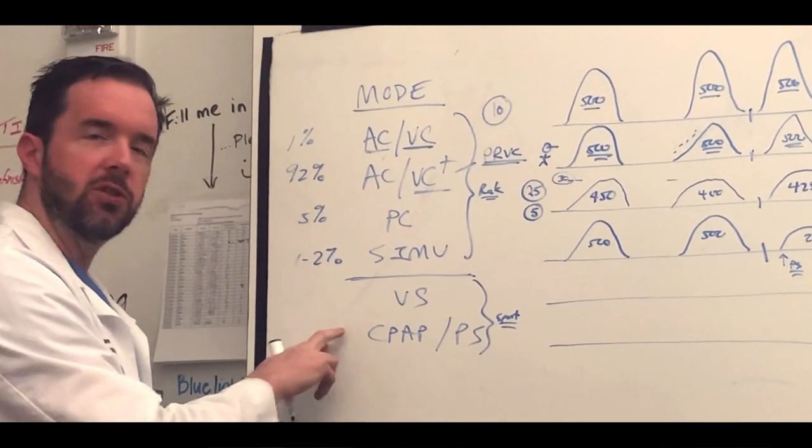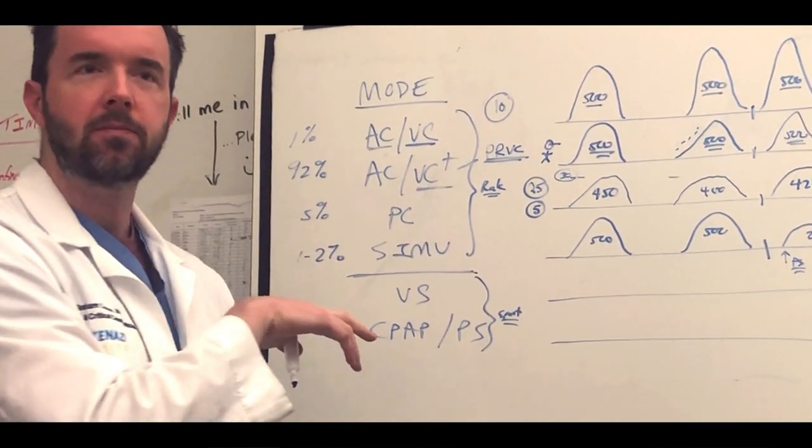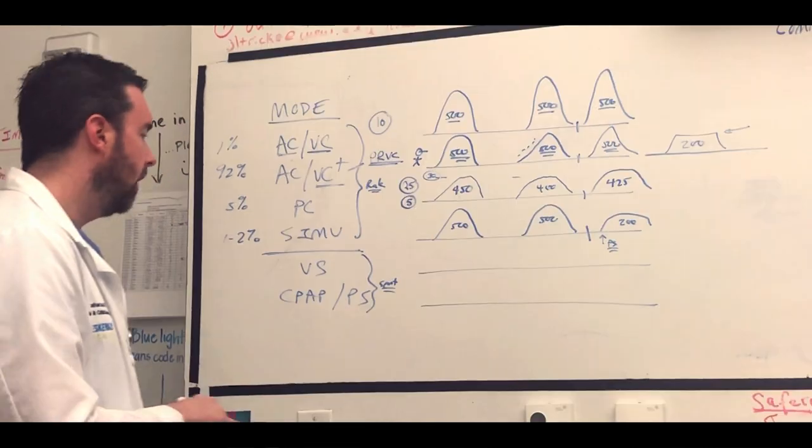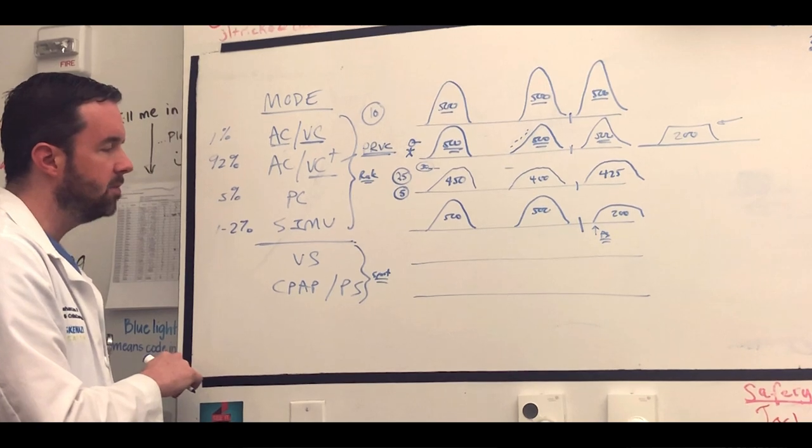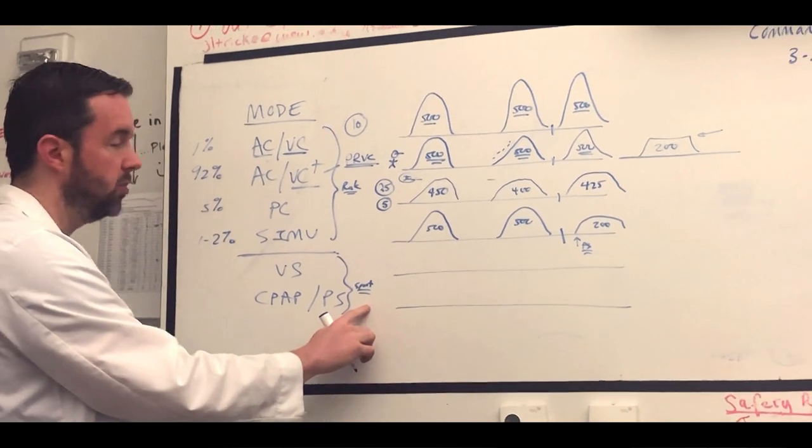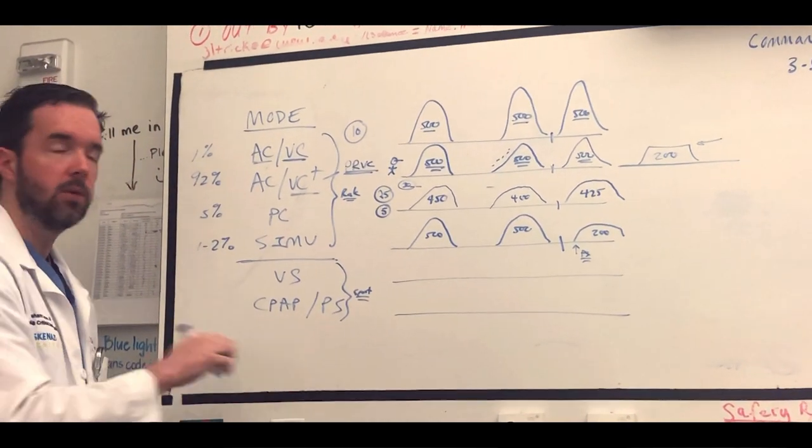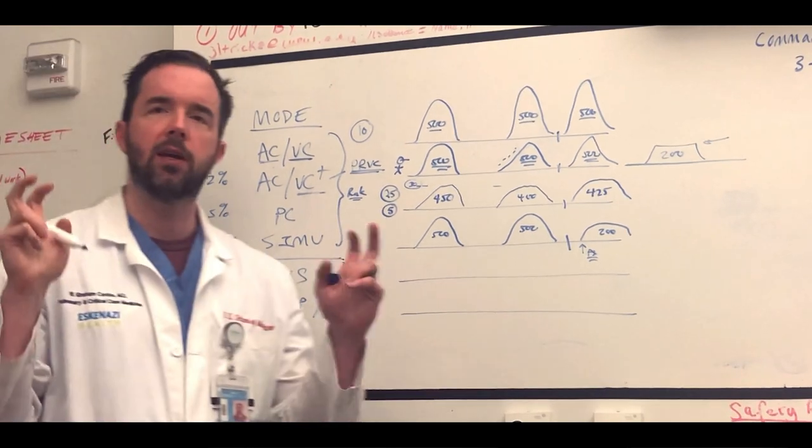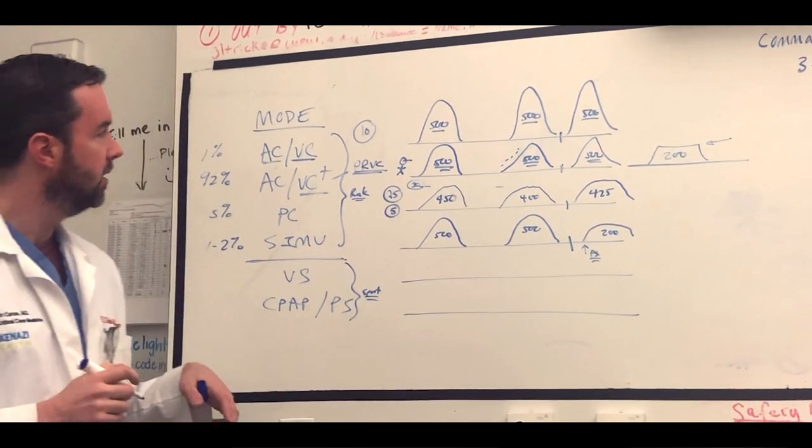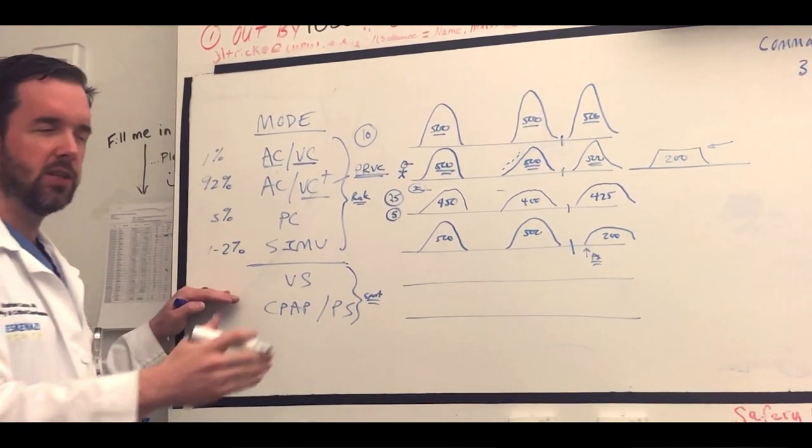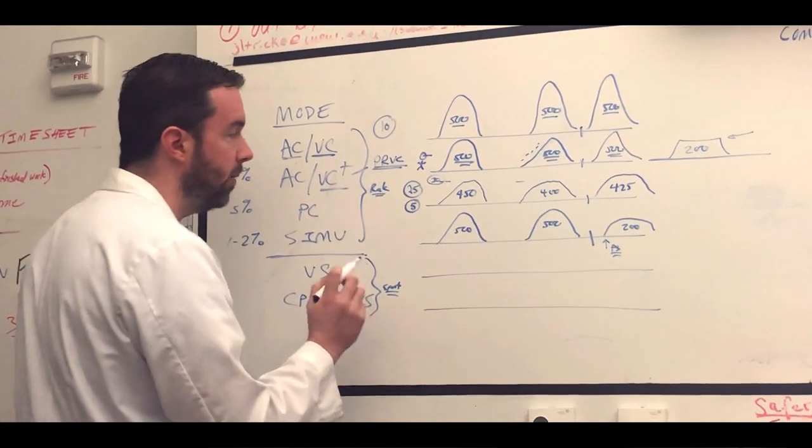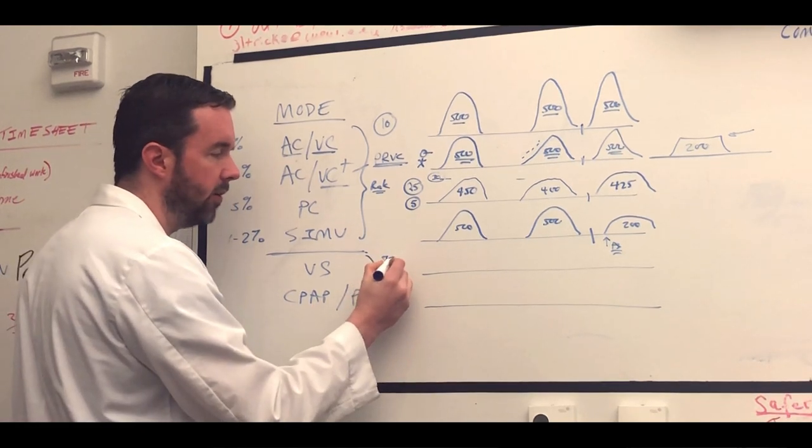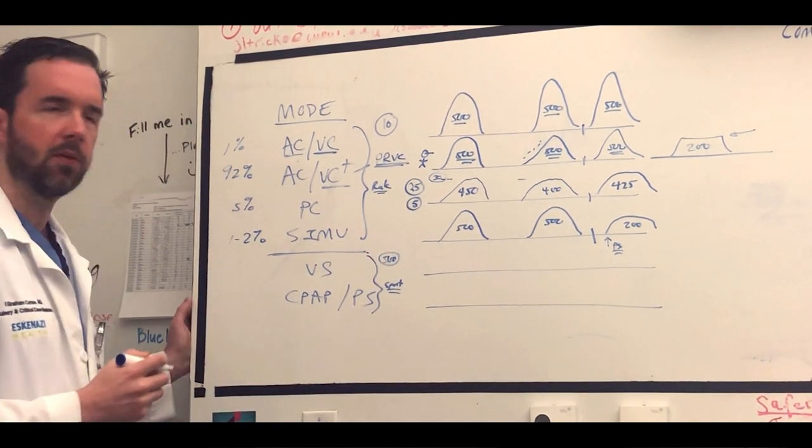Pause point for questions before we do spontaneous. All right, so spontaneous modes, we're going to walk through two: volume support and CPAP pressure support. These modes, obviously the patient has to be able to trigger the breaths on their own. Many people consider these weaning modes because we use them as we're trying to assess the patient for their readiness for extubation. Oftentimes in volume support, while we don't set a rate, we do set a volume, and I'll use 500 to keep the example the same.